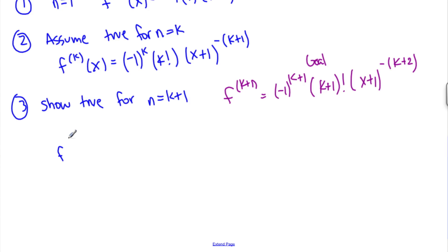So, f to the k plus 1. I have, this is a constant, negative 1 to the k. This is also a constant, k factorial. Now, take the derivative of this piece, bring this power down. So, I'll have negative k plus 1 times x plus 1 to the minus k plus 1 minus 1.